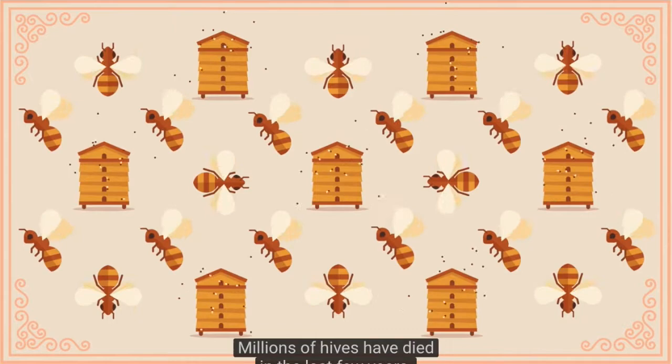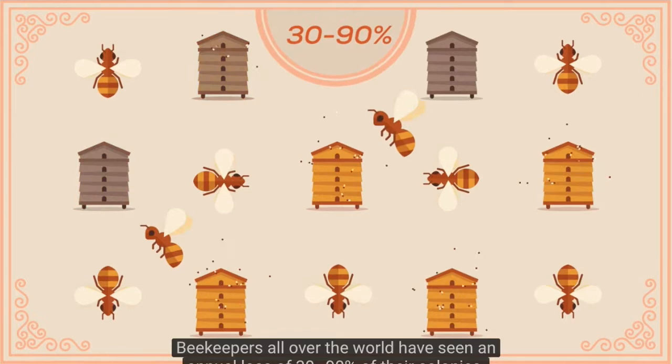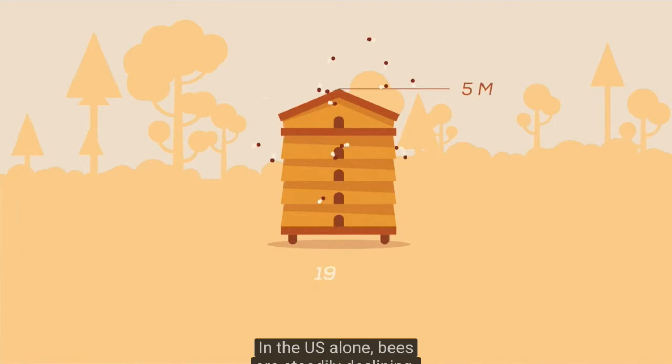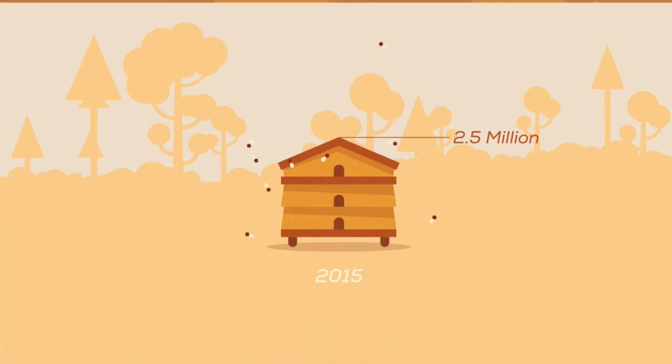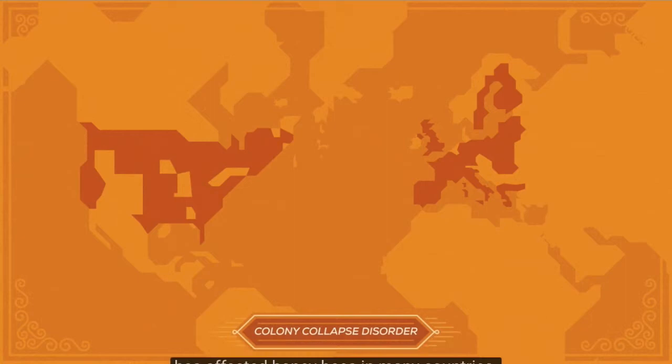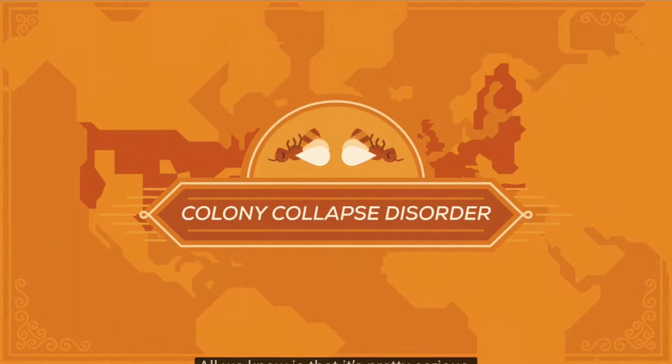Millions of hives have died in the last few years. Beekeepers all over the world have seen an annual loss of 30 to 90 percent of their colonies. In the U.S. alone, bees are steadily declining, from 5 million hives in 1988 to 2.5 million today. Since 2006, a phenomenon called Colony Collapse Disorder has affected honeybees in many countries, and we're not entirely sure what's causing it. All we know is that it's pretty serious.